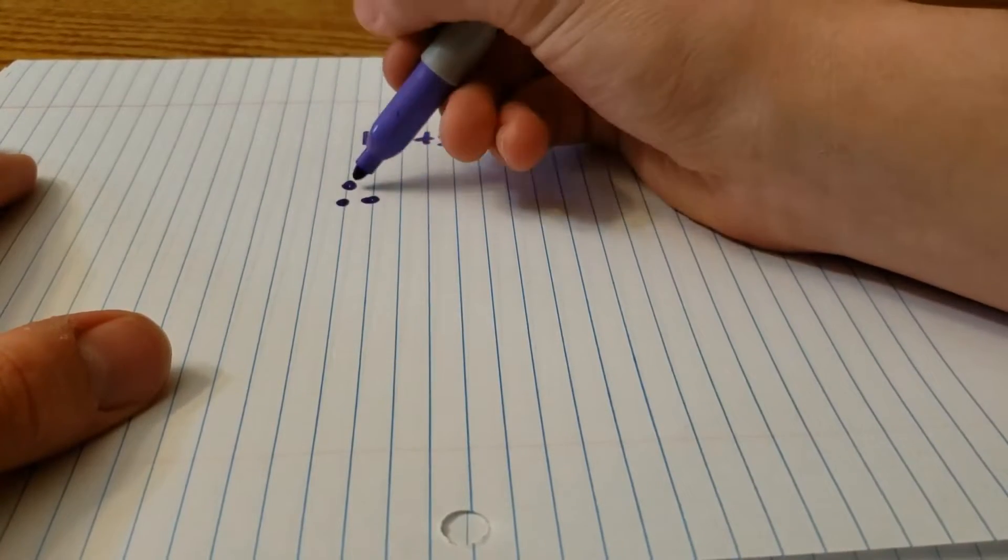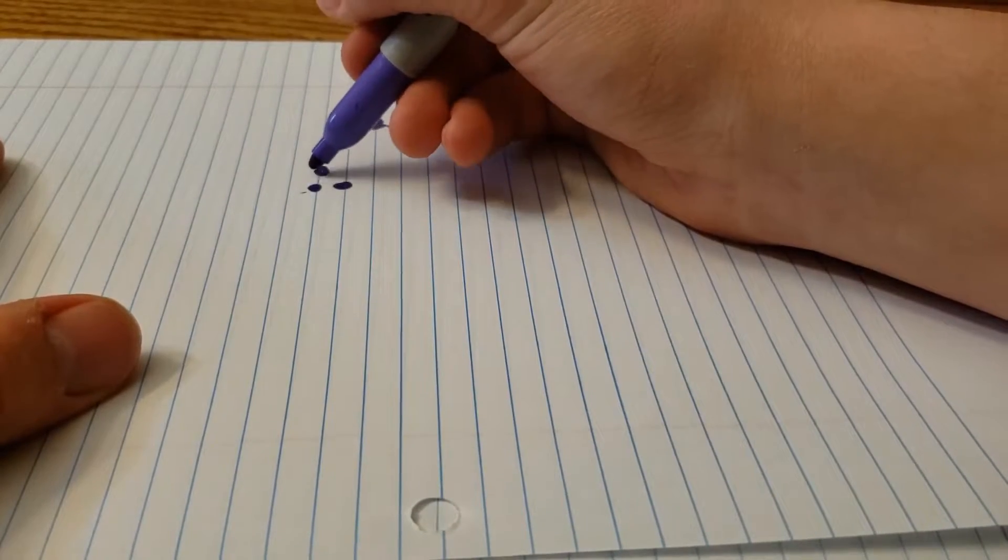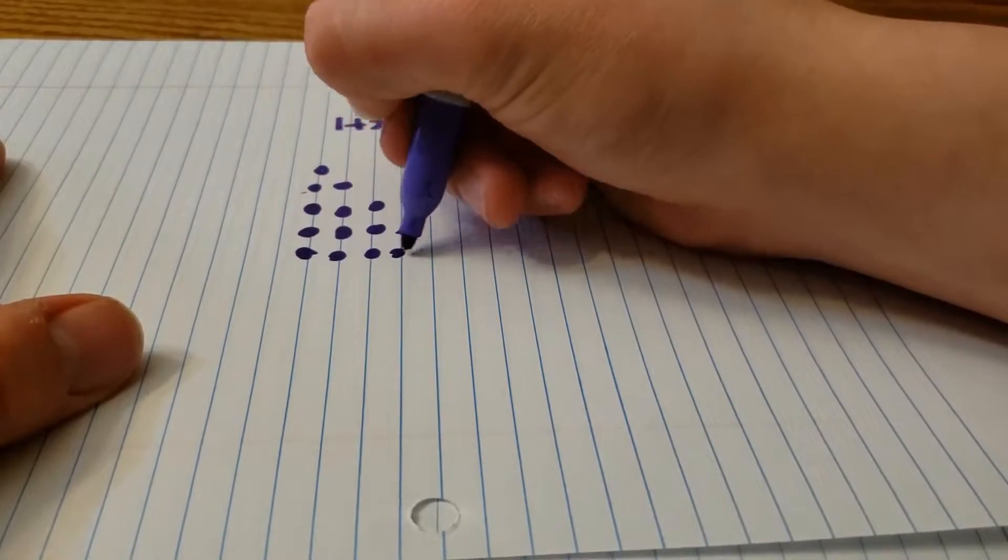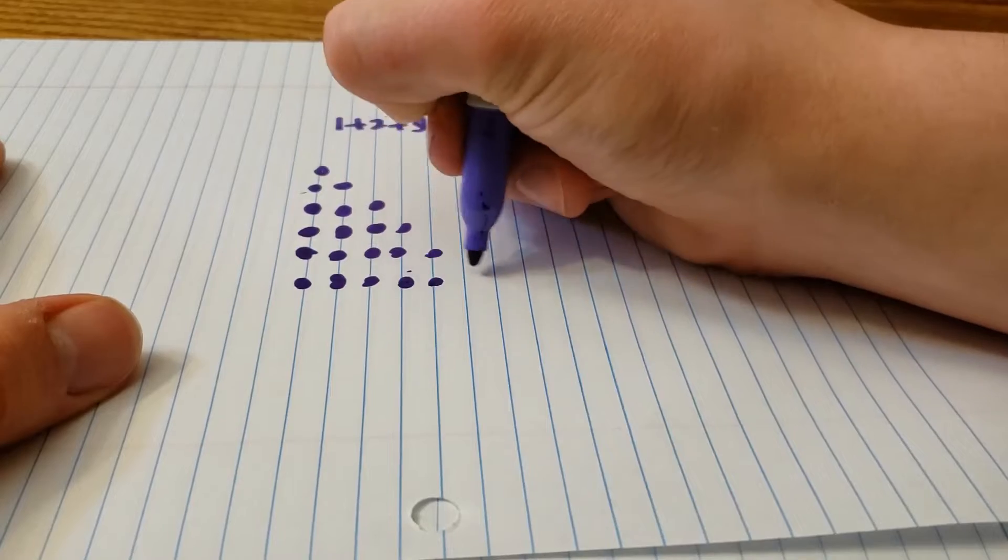First we're going to draw a triangle. We're going to start with one dot, and then for the second row of our triangle we're going to put two dots, and then three, and then four, and then so on, and we're going to do ten rows in total.